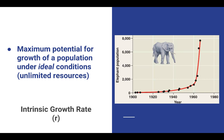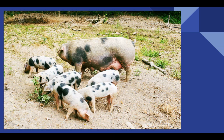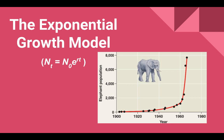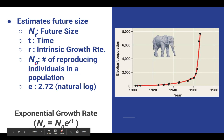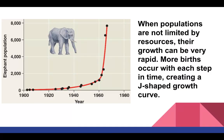You'll notice the shape of the graph as we get going. A perfect example is domesticated hogs — most will have up to 10 piglets at a time, and assuming they're on a farm with enough space, food, and water, those 10 hogs are going to reproduce and we'll see exponential growth take off. In our exponential growth model, Nt is the future size of the population, with T being time, R being that intrinsic growth rate — remember, conditions are perfect. N0 is the number of reproducing individuals, and E is the 2.72 natural log. This produces a J-shaped curve.